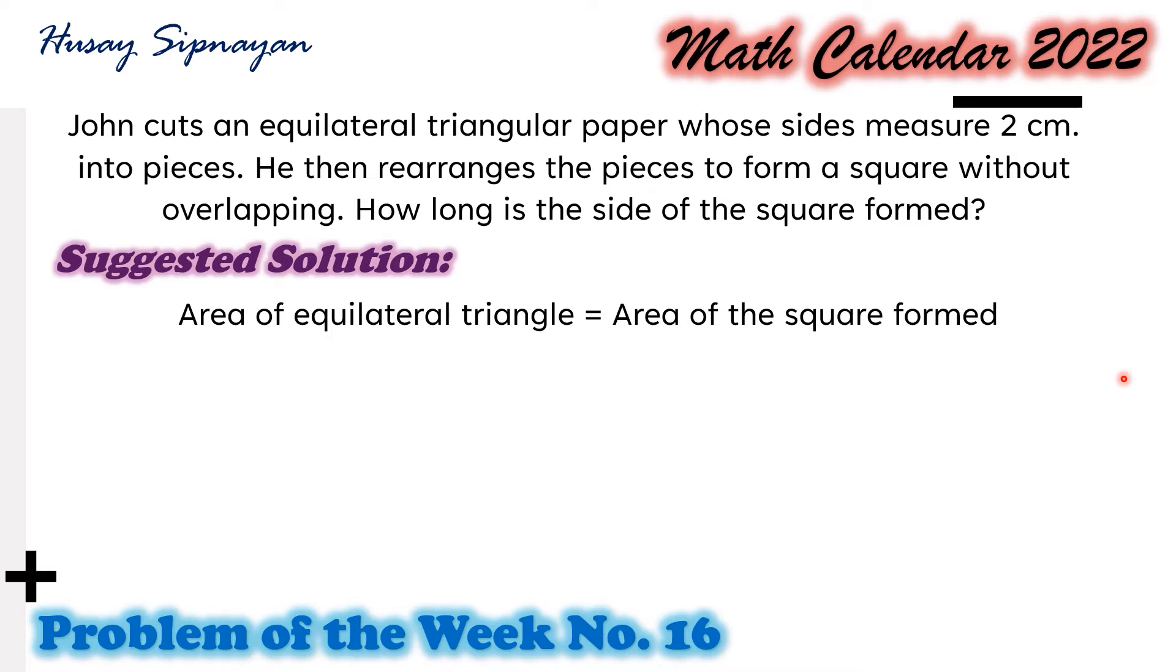Given the sides of an equilateral triangle, the area is given by s squared square root of 3 over 4, where s is the length of each side of the equilateral triangle. Now, if we let x be the length of each side of the square formed, then that area will be x squared.